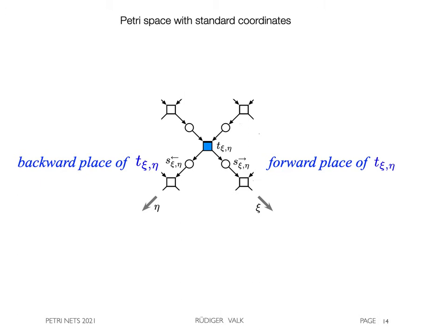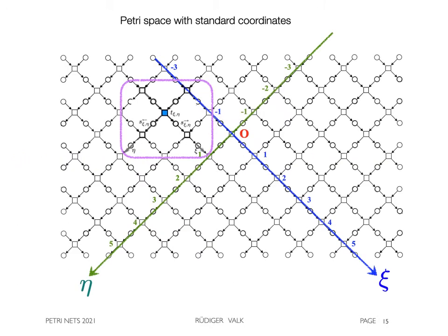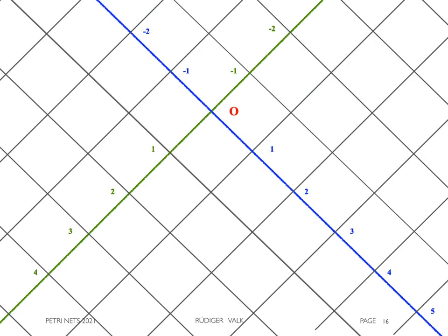More formally, transitions of the Petri space are named by their coordinates and give these to their output places. Embedded in this space, this looked like this. Then the squares of the transitions are orbited as well as the circles of the places.